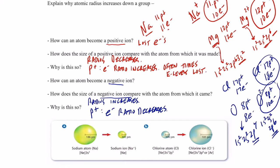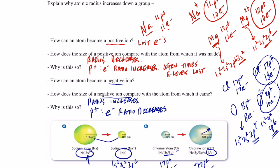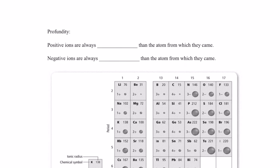Looking at this illustration: the sodium atom has three energy levels, but the sodium ion has the configuration of neon - 1s² 2s² 2p⁶ - only two energy levels, so the ion is considerably smaller. For chlorine: the chlorine atom has configuration [Ne] 3s² 3p⁵ with 17 protons and 17 electrons. The chloride ion still has 17 protons but now 18 electrons, with configuration ending in 3s² 3p⁶, like argon - so that electron cloud gets bigger.